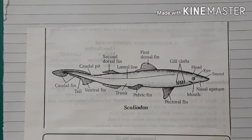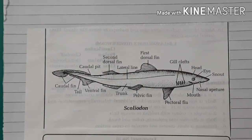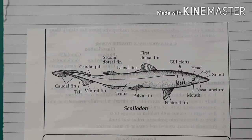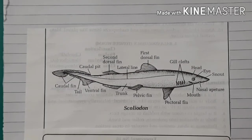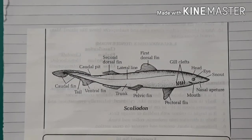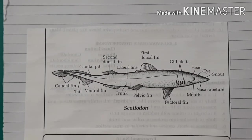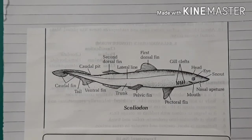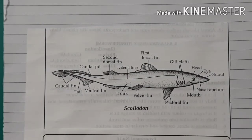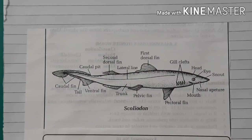Superclass Pisces is divided into two classes: Class Chondrichthyes and Class Osteichthyes. The first class is Class Chondrichthyes. Examples: Scoliodon, Electric Ray, Sting Ray, Hammerhead Shark, and Sawfish.